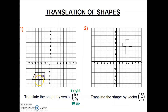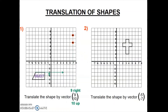I'm going to look at each individual corner — each individual point on this shape — and translate all points nine to the right and ten up. Taking each point in turn: nine to the right and ten up, and the point lands in the new position. I continue with all the remaining points — nine to the right and ten up for each one. Once I've translated each individual point, I take my ruler and draw in the new shape. It should be exactly the same size — it should be congruent, exactly the same size as the shape we started with. We're not enlarging, so it should be the same size shape.